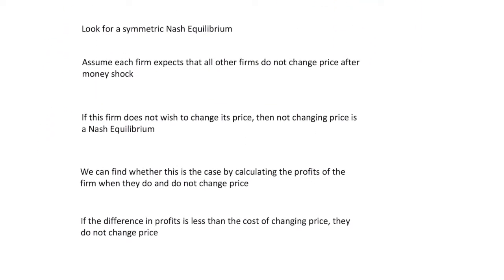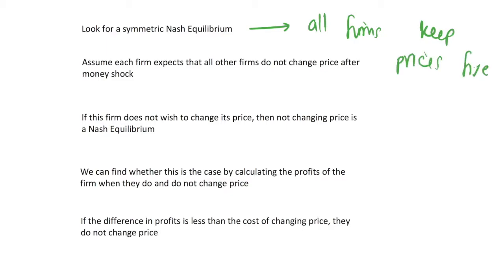We can formalise this by looking at a symmetric Nash equilibrium in this economy. This symmetric Nash equilibrium is a case where all firms keep their prices fixed. Because we are thinking about a representative firm, they're all going to be the same. We're looking for an equilibrium where every firm keeps their price fixed after a money shock, which might have quite a large effect on aggregate output. Firms may have to adjust their output to make up for not changing their prices, which could have real effects on the economy.